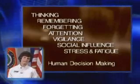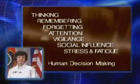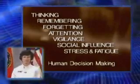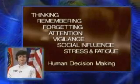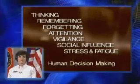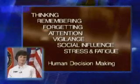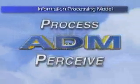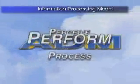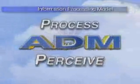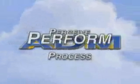Now we have the theoretical basis underlying human decision making, complete with the errors inherent in the process. Let's move on to learning a method to help counteract some of these human frailties in our aviation activities: perceive, process, and perform. This is a simplified information processing model that we can literally use on the fly. Let's first look at an overview of the perceive, process, and perform model. As an example, we're told to taxi to runway 7 via Alpha.